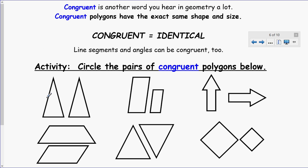Now you're going to learn a new term. Well, actually, it really shouldn't be new, it should be a review. Congruent. That's another word you hear in geometry a lot. Congruent polygons have the exact same shape and size. So congruent equals identical. Line segments and angles can be congruent too, but here we're going to mostly talk about congruent polygons. They have to be identical. So now why don't you try the activity. Circle the pairs of congruent polygons below. And then check back in with me and see if we have the same.